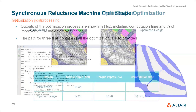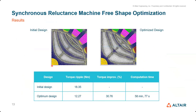For comparison, the initial design and the optimized design are shown side by side. The torque ripple improved by 30% from the initial design. The optimization ran for approximately 58 minutes for the objectives and constraints defined. That concludes the demonstration of shape optimization in Flux.